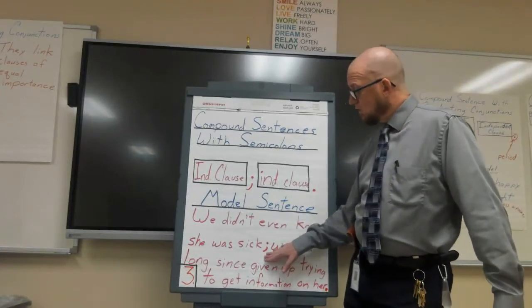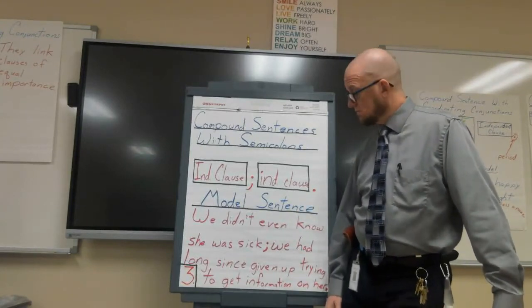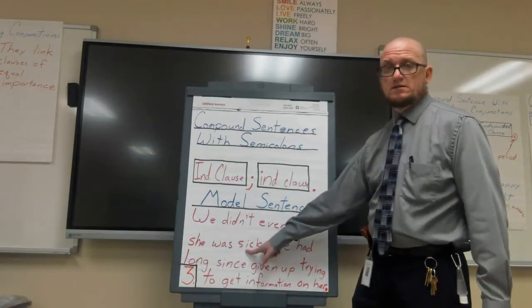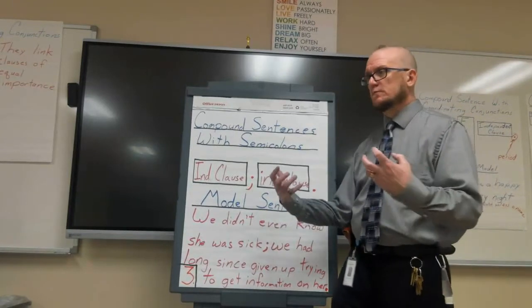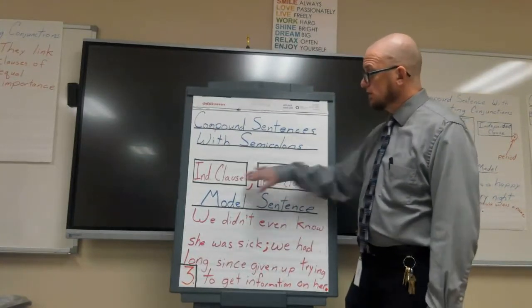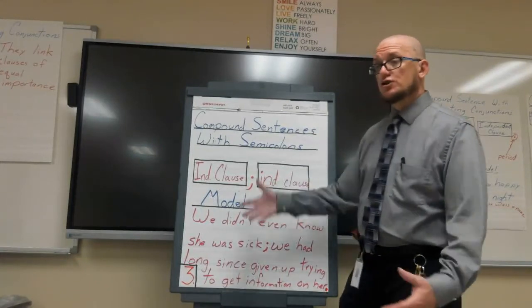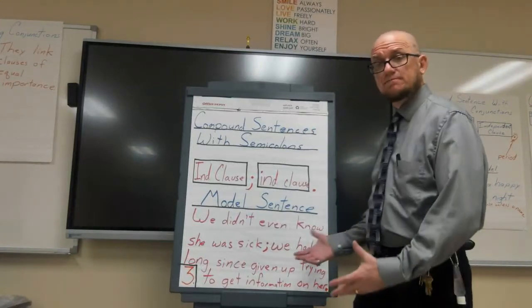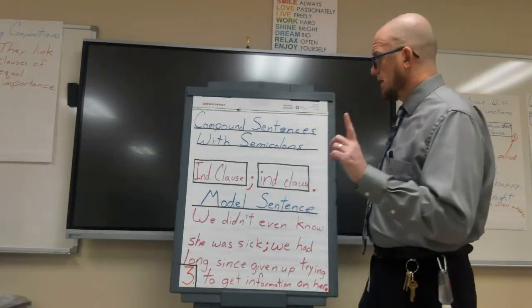So why would I use a semicolon here rather than a period? It's not as much about sentence structure as it is logic. This second part gives the reason we didn't know she was sick, so they're very closely connected in idea. That's when you link two independent clauses together—to show a very close relationship. That is the most basic, easiest use of a semicolon.